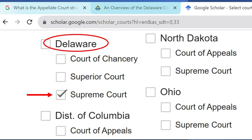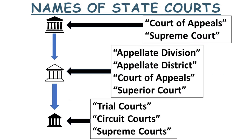Some states name their highest court the Court of Appeals, but other states name it Supreme Court — each state thinks they're special. Learn the naming structure from official websites like state government websites or law schools.